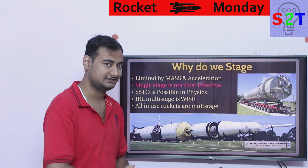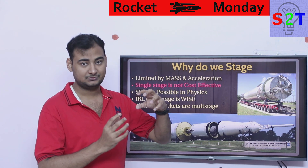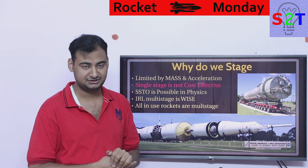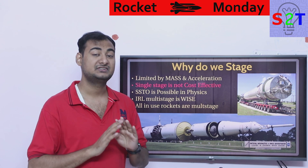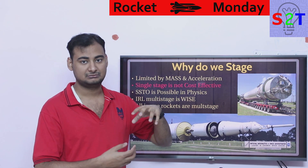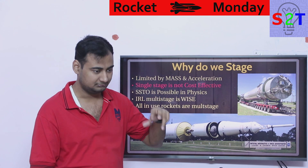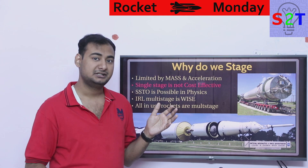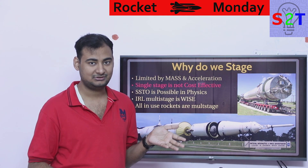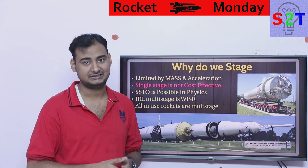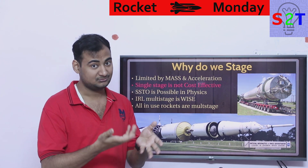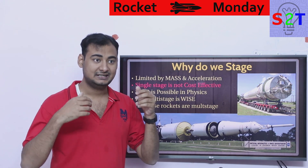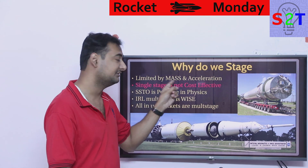Multi-stage is wiser. Almost all rockets that have reached orbit are multi-stage. Think about Falcon 9's first stage — nine engines, 22 tons empty. If you made it bigger, added more engines and fuel, could it reach orbit in one stage? Absolutely. But your payload would be much smaller because you are not dumping the extra mass. The tank is still there, adding mass and slowing acceleration, so more thrust doesn't translate into orbital speed.